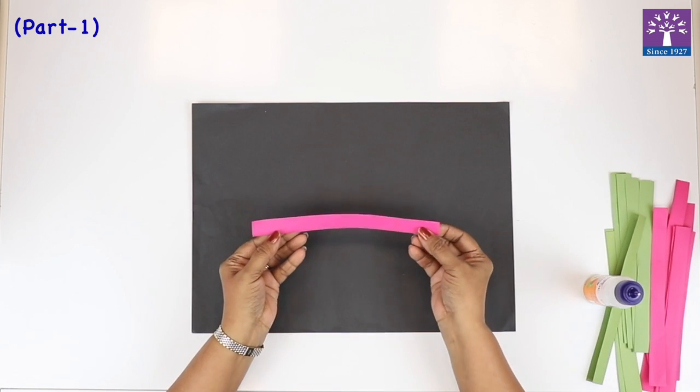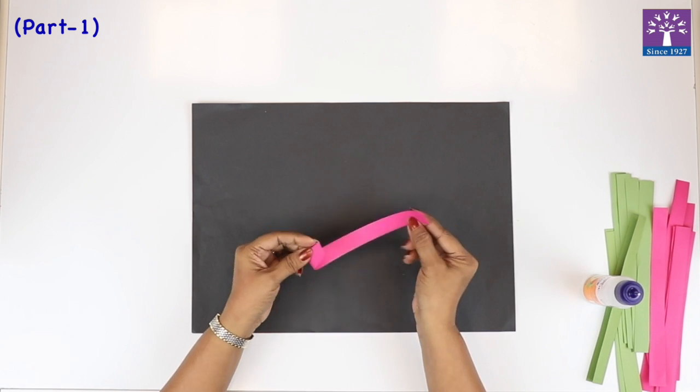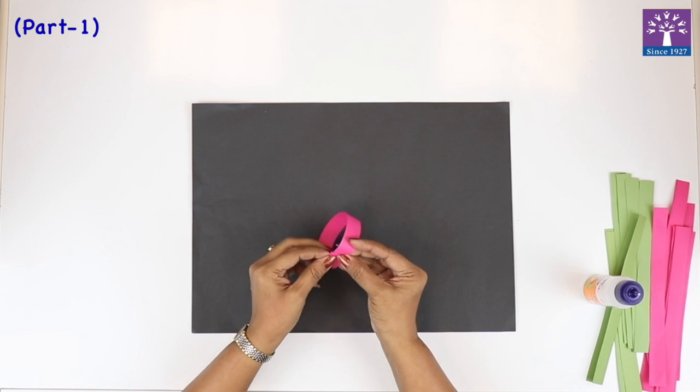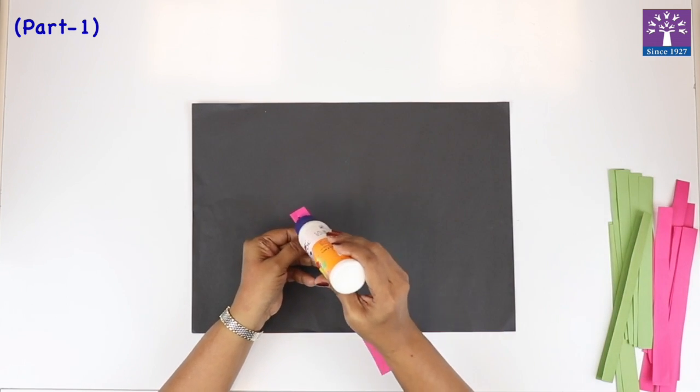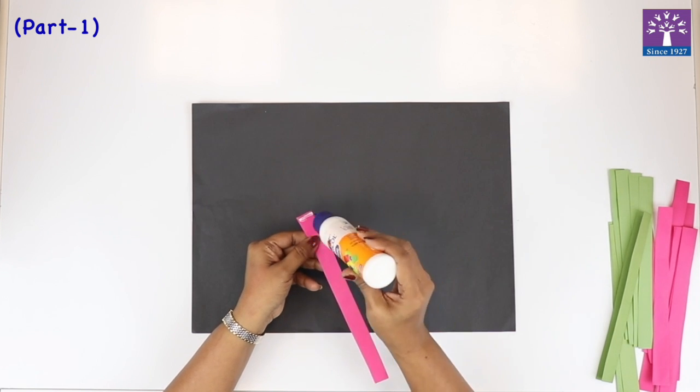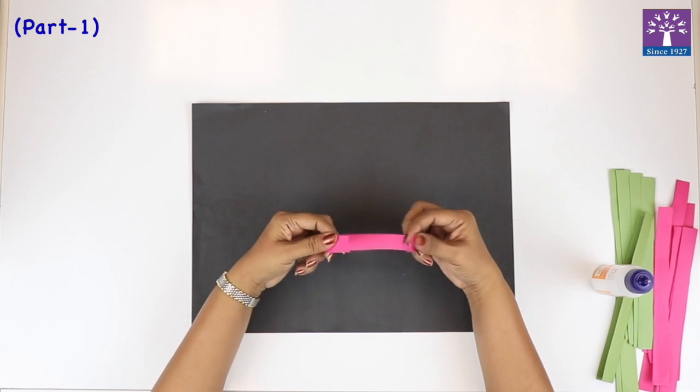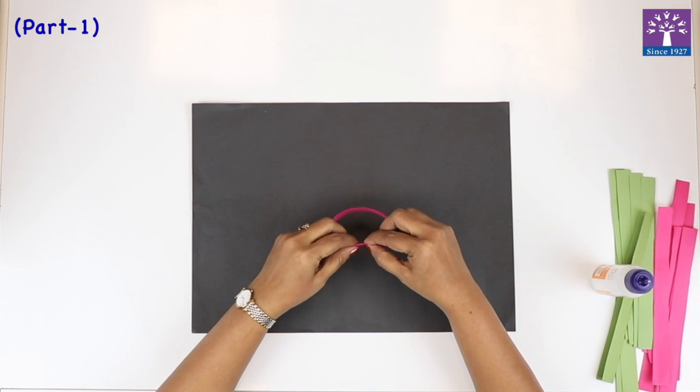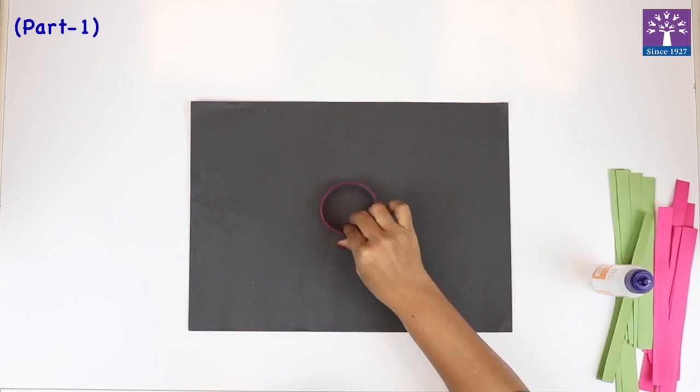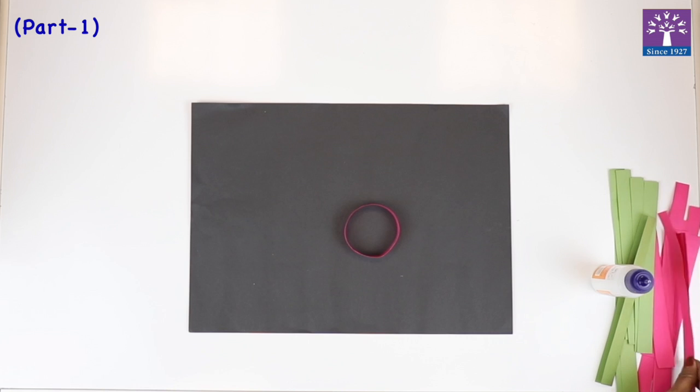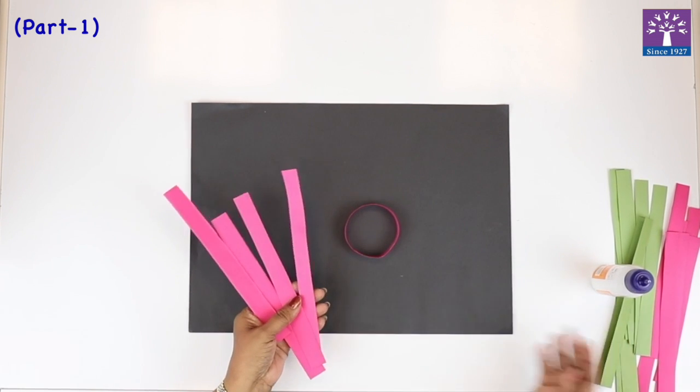What we're going to do is glue these paper strips at the edges. See, the two edges of the paper strips, we're going to glue them like this to make a circle. I'll apply some glue over here. Now, we will stick the edges and make a circle. We'll make circles out of these strips now.